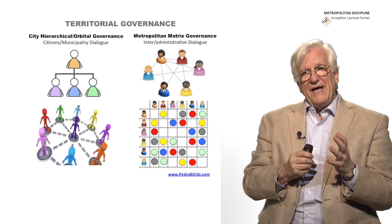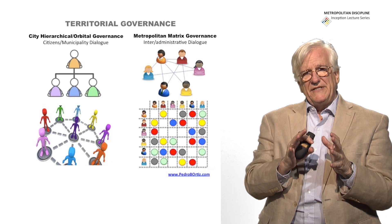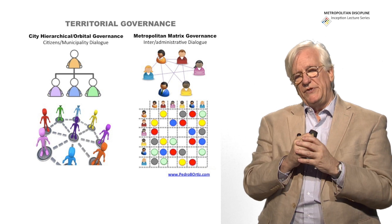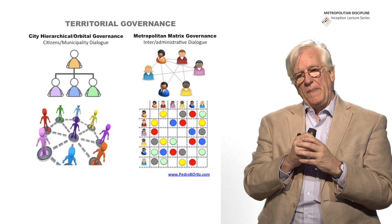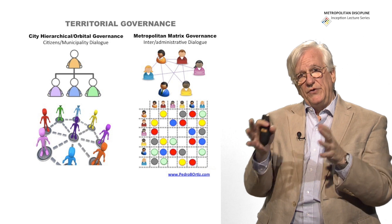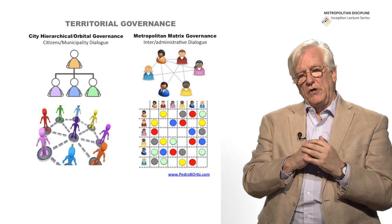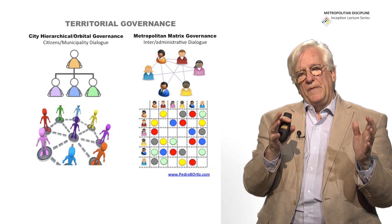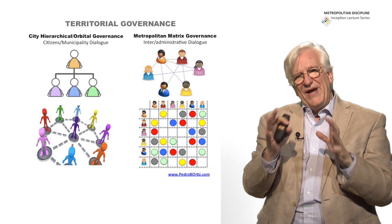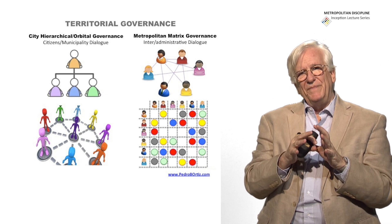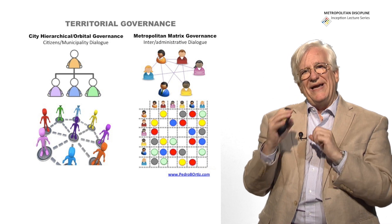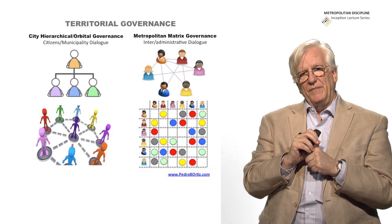We must understand that whatever governance mechanism we choose — whether confederate, unitary, or federal — the way we handle the metropolis has to be completely different from the way we handle urban systems.